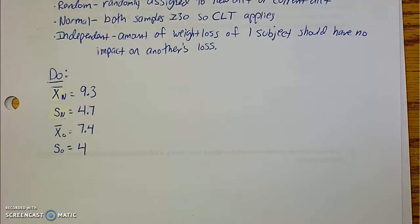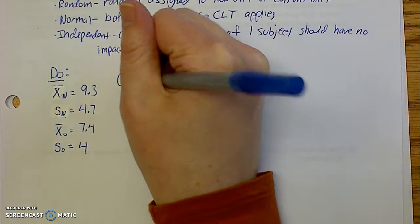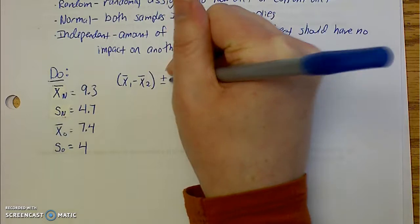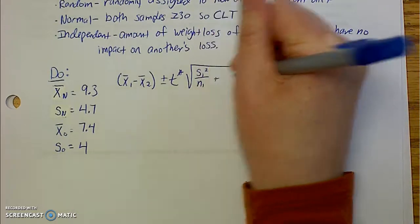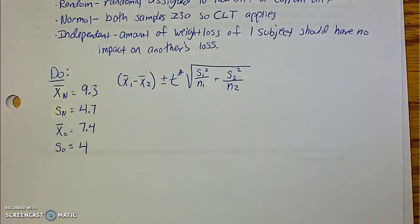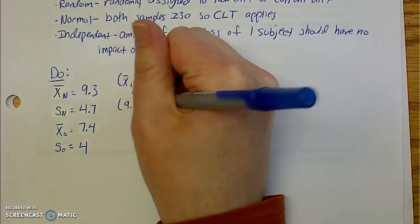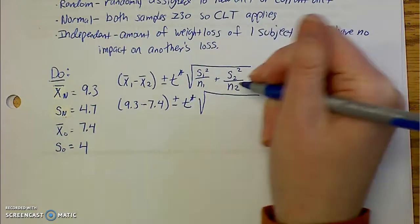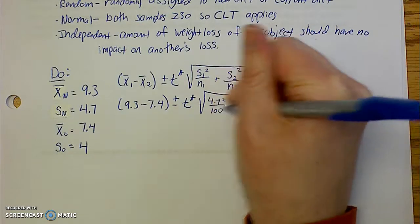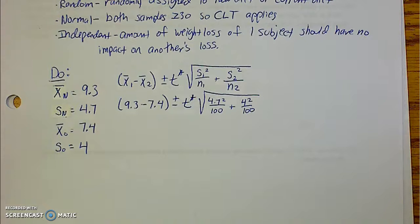So some information that we know. So let's go ahead and start filling things in to our formula. So our formula from your previous page of your notes. This is going to be x̄ sub 1 minus x̄ sub 2 plus or minus your t star times your standard error. S₁ squared over n₁ plus s₂ squared over n₂. So let's go ahead and substitute in what we know. So we're using n for 1 and o for 2. So we've got 9.3 minus 7.4 plus or minus my t star, which I'll find here in a second. Big square root. 4.7 squared over both of our sample sizes for the groups were 100. And 4 squared over 100. Okay. So that looks pretty good.